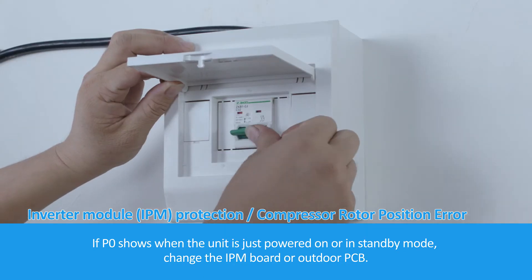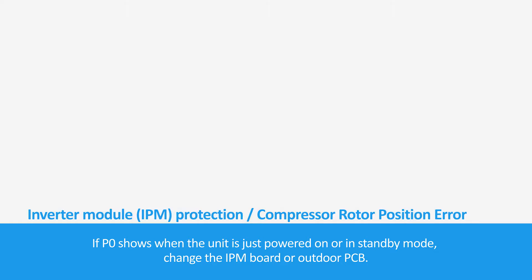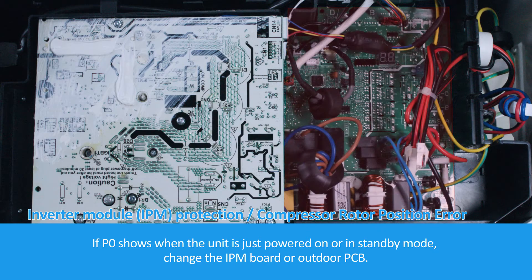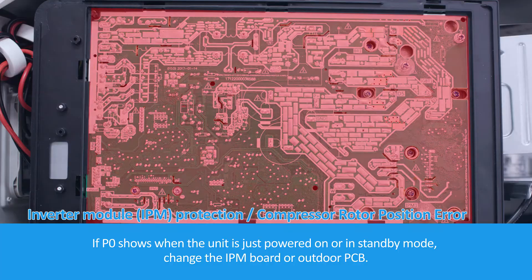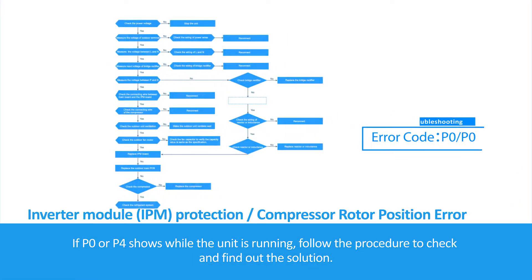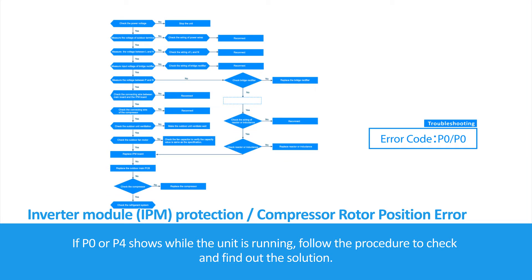If P0 shows when the unit is just powered on or in standby mode, change the IPM board or outdoor PCB. If P0 or P4 shows while the unit is running, follow the procedure to check and find out the solution.